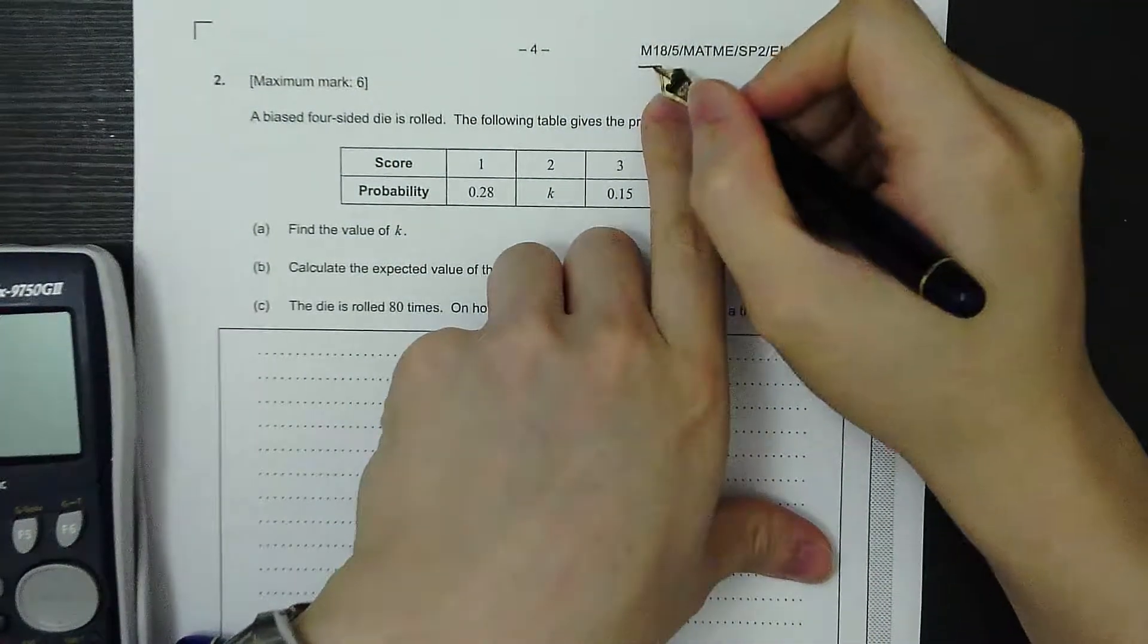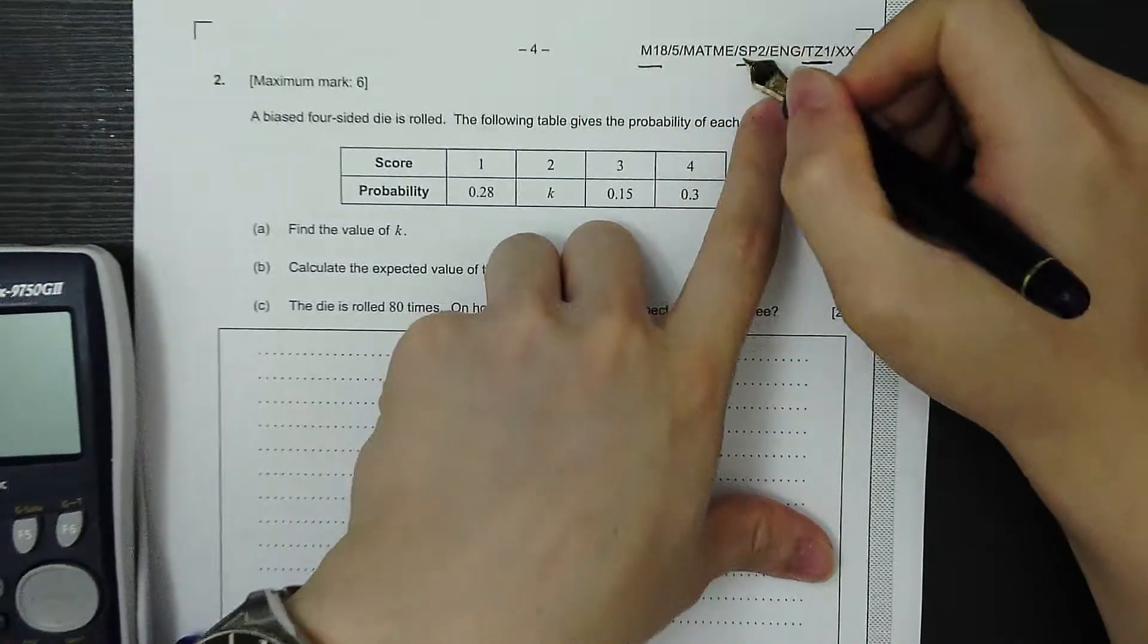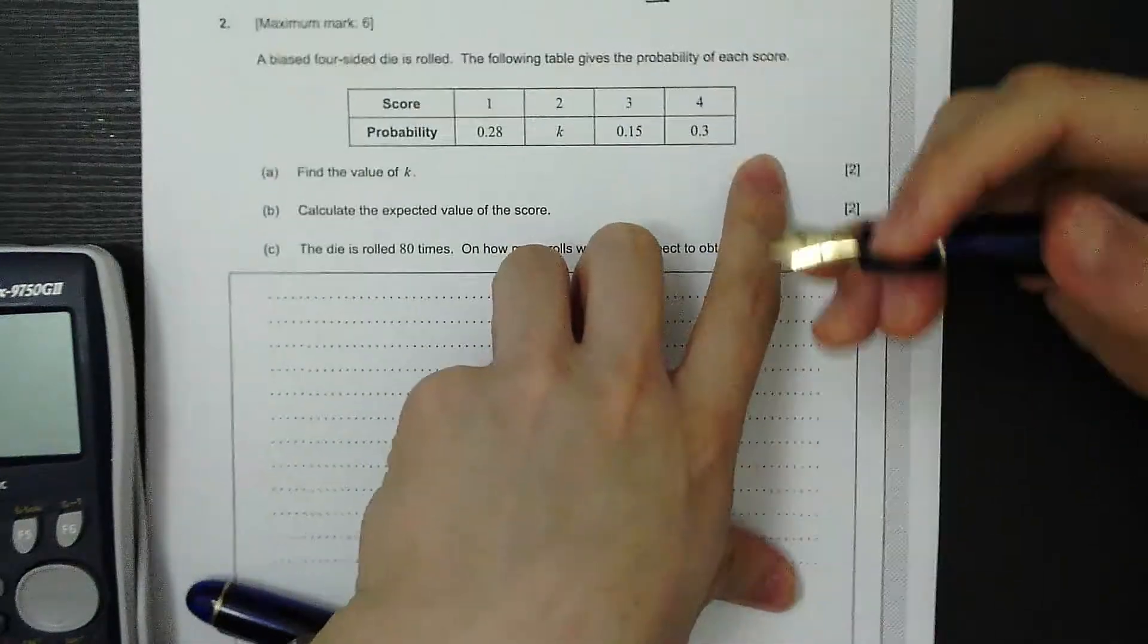2018 May Math SL Paper 2 Time Zone 1. Paper 2 is a calculator question, so we can use the calculator GDC.